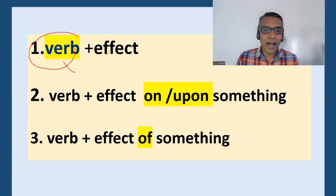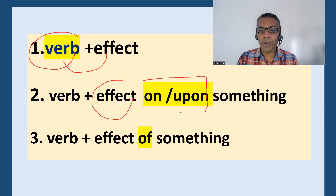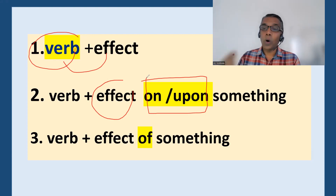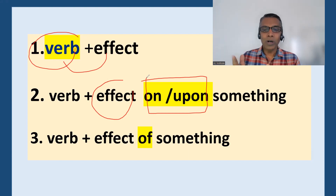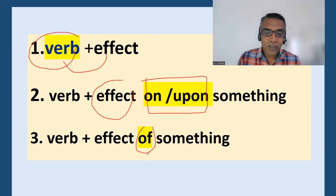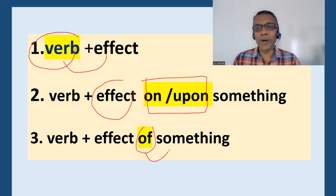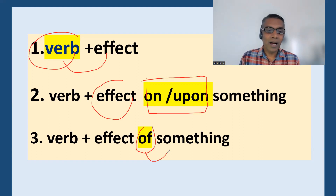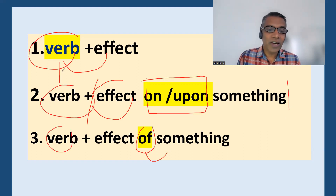We can say 'effect on something' or 'effect upon something' — for example, 'effect on children' or 'effect upon children'. We can also say 'effect of something', for example, 'the effect of the internet' or 'the effect of education'.